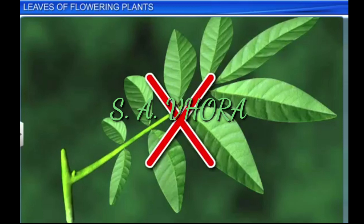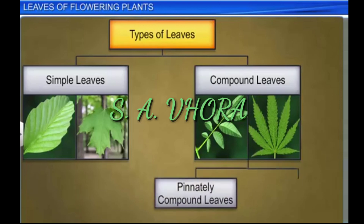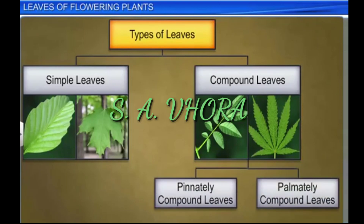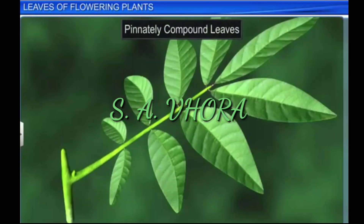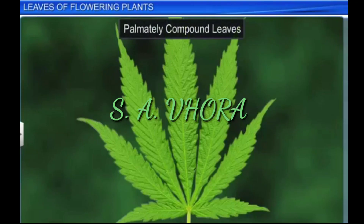Compound leaves are classified as pinnately and palmately compound leaves. In pinnately compound leaves, the lamina is divided into smaller leaflets arranged on each side of the leaf's central stalk, called the rachis or axis. In palmately compound leaves, the leaflets radiate outwards from the end of the petiole, like fingers of the palm of a hand.